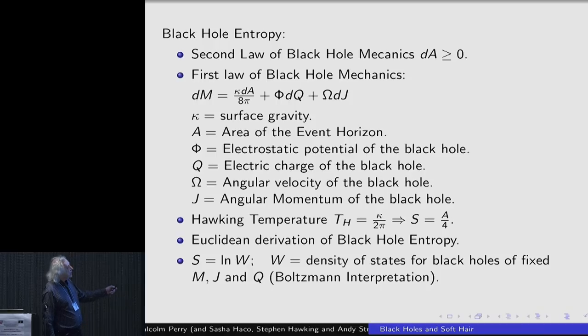It simply said that a change in the mass of the black hole was equal to something that looked like a geometrical quantity, kappa dA over 8 pi, where kappa is the surface gravity, together with some mechanical things that looked like phi dq. Phi is the electrostatic potential of the black hole and q is its charge. So this is the work done if you want to change the charge of the black hole by an infinitesimal amount. Similarly, there's an omega dj. That changes the rotational energy of the black hole by an amount given by the angular velocity times the change in angular momentum.